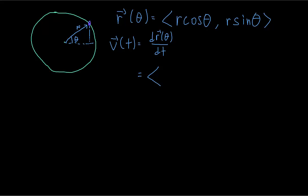Remember that when taking the derivative of a vector, you can do it component by component — you can differentiate the x and y components separately. The x component is going to become −r·sinθ times dθ/dt, and we need that because of the chain rule, since θ is a function of t as well.